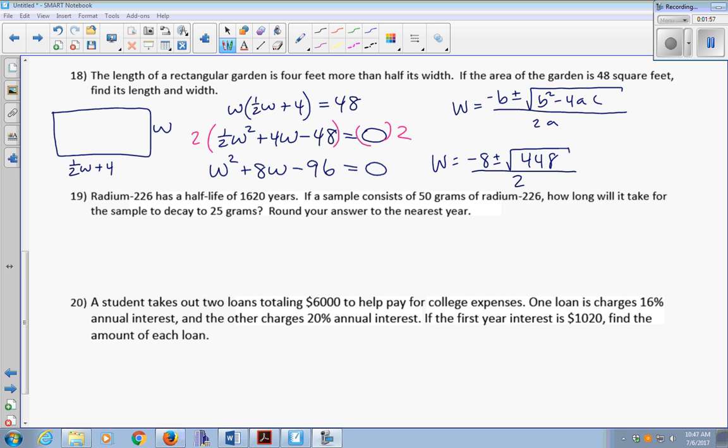So this is negative 8 plus or minus the square root of 448, which is approximately 21.2. Because this is a real-life problem about a garden, it's okay if you round your answer, so I am going to round the square root of 448. Negative 8 plus 21.2 is 13.2, divided by 2 is 6.6. And then negative 8 minus 21.2 is going to be negative.